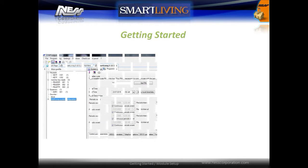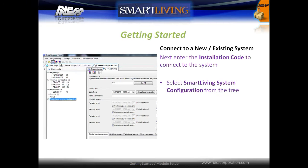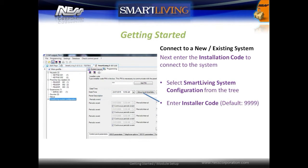Next, enter the installation code to connect to the system. Select the Smart Living system configuration tree, and then enter the install code in the field provided. The default is 9999.